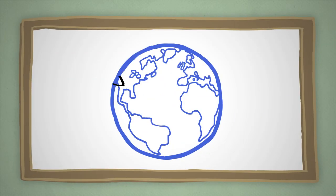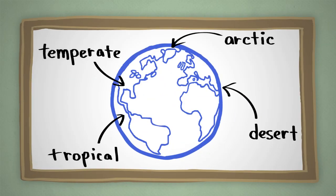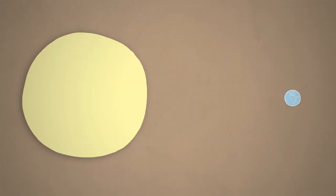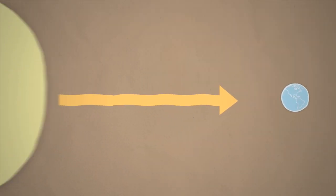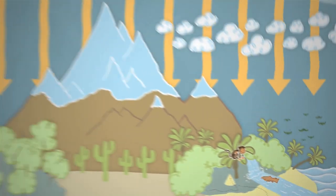In a nutshell, climate can be described as the average weather over time. Here's how climate works. When energy from the sun interacts with the atmosphere, oceans, land, ice, clouds, and living things on Earth, it creates the climate.